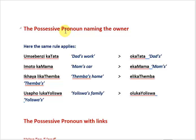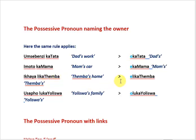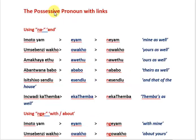The same rule applies: look at the first vowel of the noun which is the possession, and the first vowel highlighted. 'Umsebenzi kaBaba' — my dad's work; 'okaBaba'. The vowel a and u gives o. 'Imoto kamama' — mom's car; 'ekamama' — that belonging to mom. 'Ikhaya likaTemba' — Temba's home; 'elikaTemba' — that belonging to Temba.